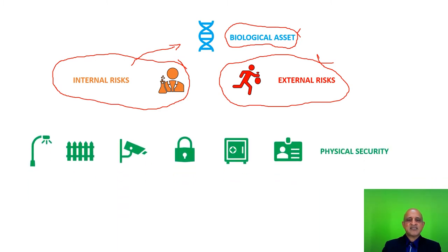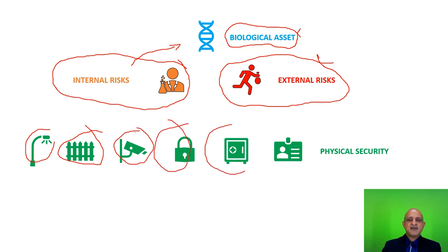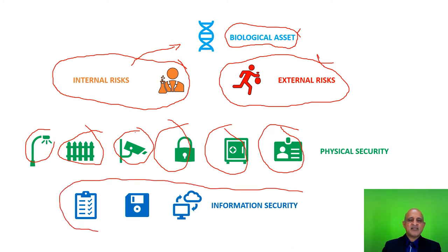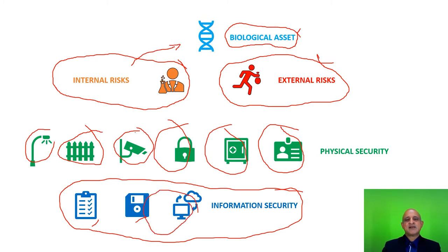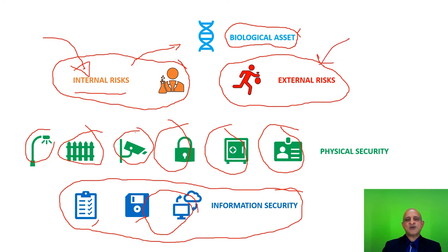Physical security is addressed in the form of general security measures: lighting, security barriers, CCTVs, closed circuit cameras, locks, inventories, and personal security in the form of identity cards. We also have to implement information security, which may be in the form of checklists, secure cloud storage, and storage of documentation within the facility itself. For internal risks, personnel screening may be done in consultation with your local law enforcement authorities. External risks must be addressed based on regional requirements, including threats from bioterrorism as well as theft of the biological agent.